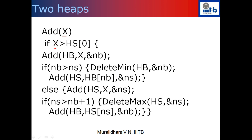For the add operation: if we want to add x, we first ask whether x is greater than the current median (which is at the root of hs). If x is greater than the median, it goes to the right-hand side heap hb. But after adding to hb, the number of elements on the right side may exceed the left side, breaking the balance. So if nb > ns, we delete one node from hb and add it to hs.